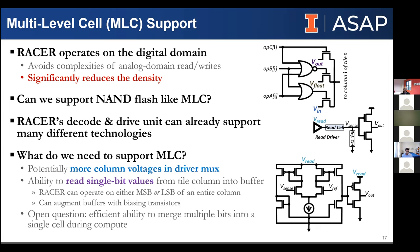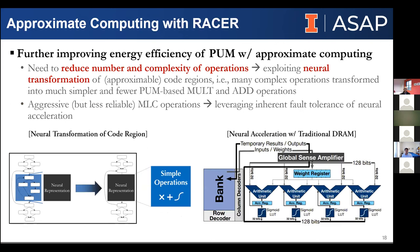One of the big open questions is how we can efficiently merge multiple bits and write them to a cell. We hope that by doing that we can scale up much in the way that NAND Flash has, but also enable processing-in-memory at the same time.